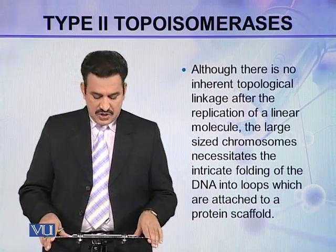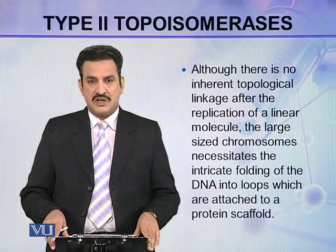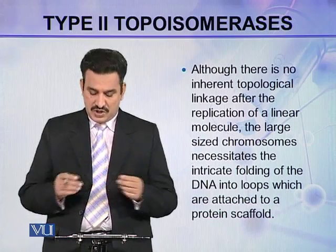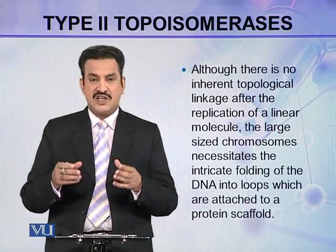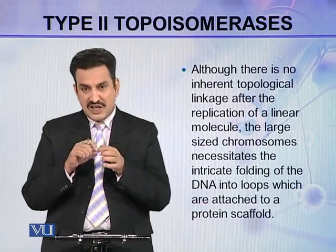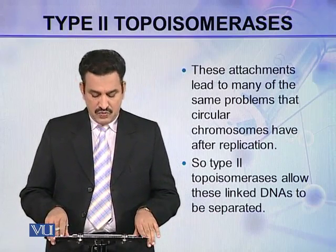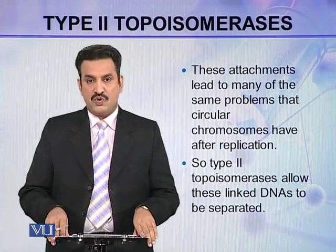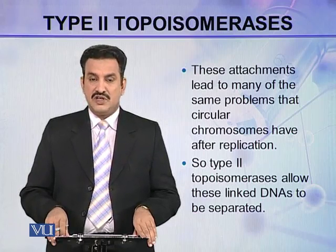These loops are attached to a protein scaffold, as we studied in chromatin arrangement and DNA compaction. When the DNA folds into loops and those loops attach to the protein scaffold, there are many points where such linkage between chromosomes or DNA molecules takes place. These attachments lead to many of the same problems that circular chromosomes have after replication, and type 2 topoisomerases allow these linked DNAs to be separated in linear molecules.